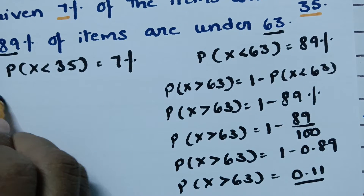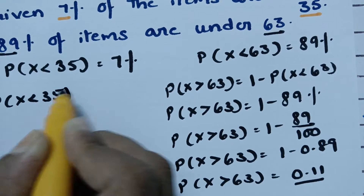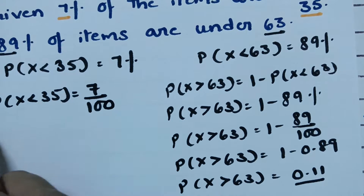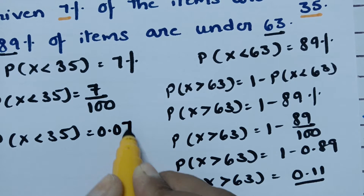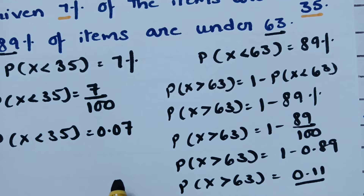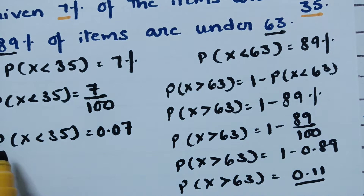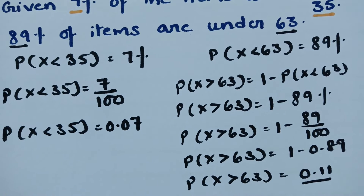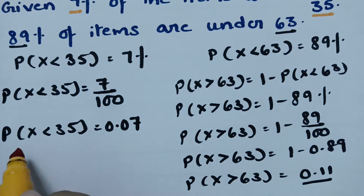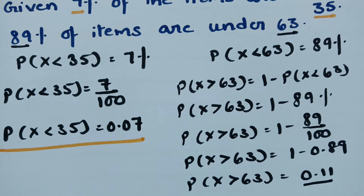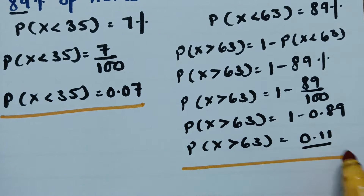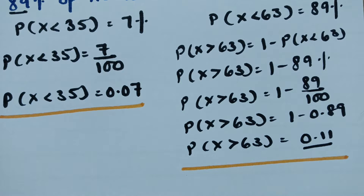So probability of X less than 35 is equal to 0.07, and probability of X greater than 63 is 0.11. Now we have to plot this in the diagram as this is a very important figure.